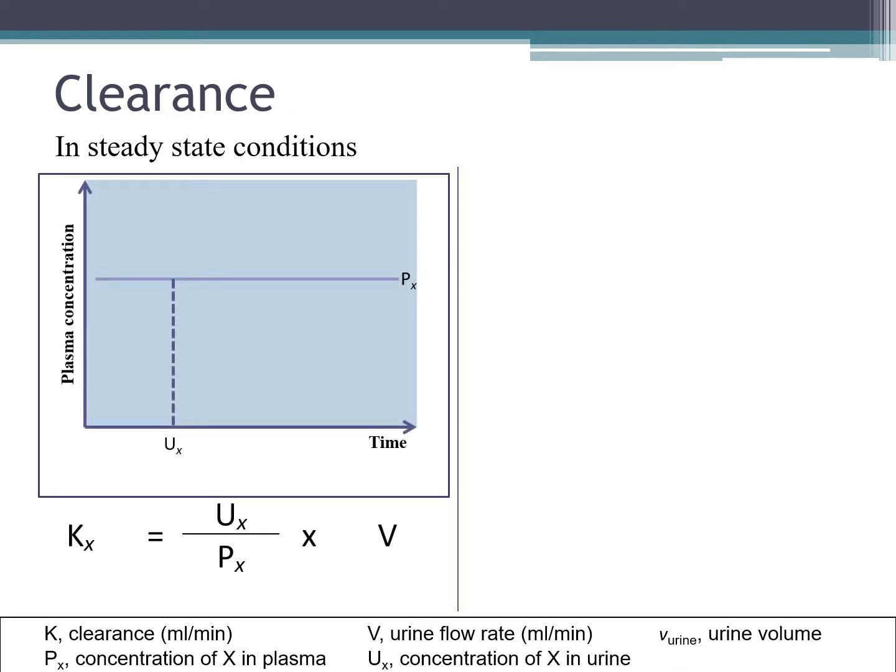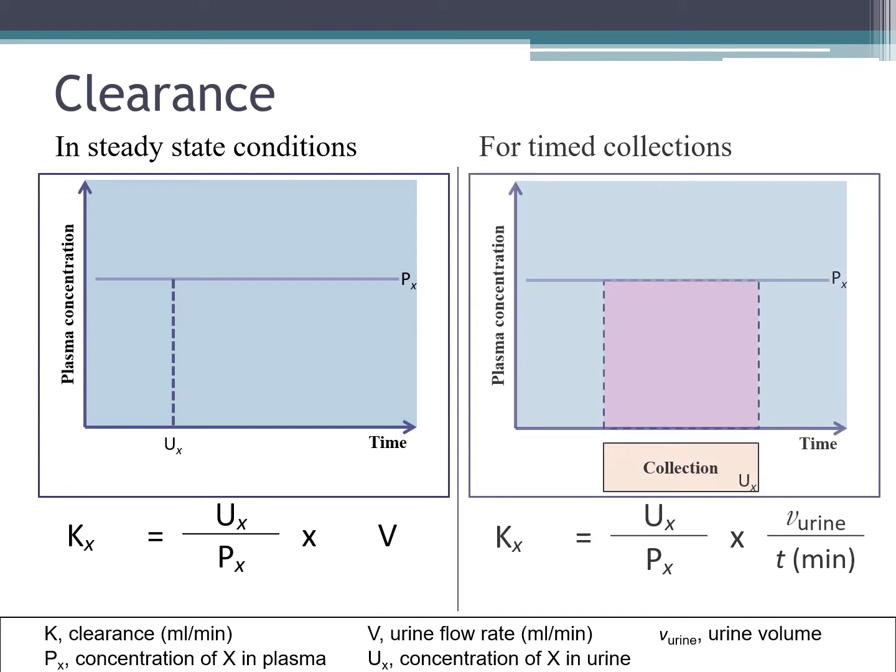This simple formula works in steady conditions, and if you use a time collection of urine, it will be calculated by K equals to urine concentration and plasma concentration of the substance multiplied by the urine flow rate, which is the volume of urine collected over the time with which the volume was collected.